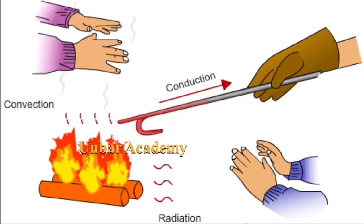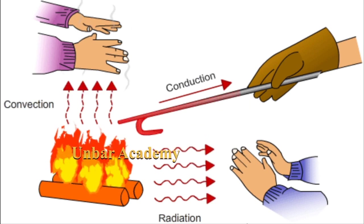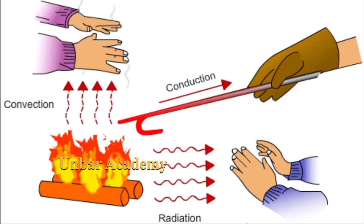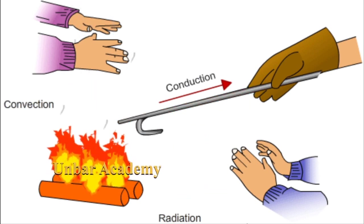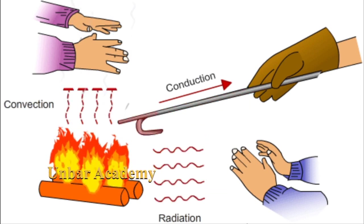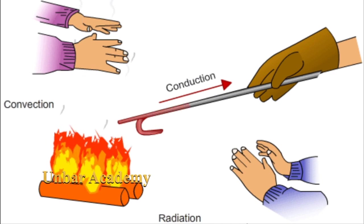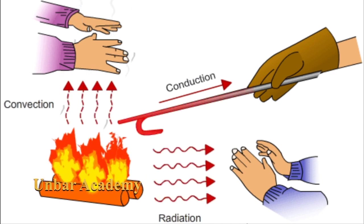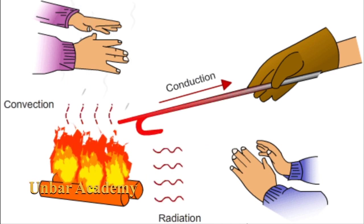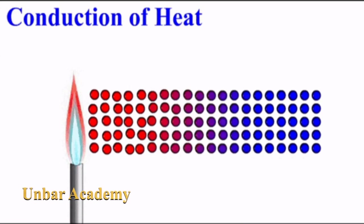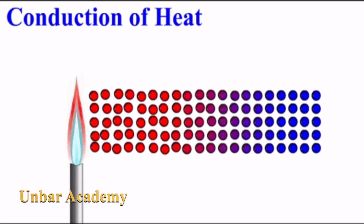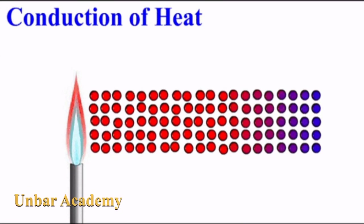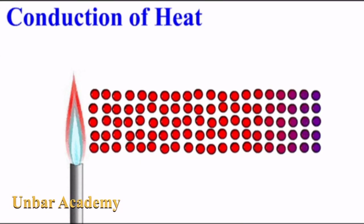When you put a metal stick into hot water, some of the heat energy from the water is transferred to the metal particles. As a result, the particles of the metal start to vibrate and collide with their neighboring particles. This collision spreads the energy through the stick.